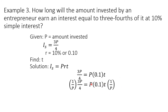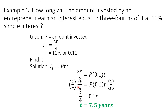So the equation reduces to 3/4 equals 0.1T. We then use MPE again by dividing both sides by 0.1. Dividing 3/4 by 0.1 gives 7.5, and 0.1 divided by itself is 1, leaving just T. Therefore, the value of T is 7.5 years.